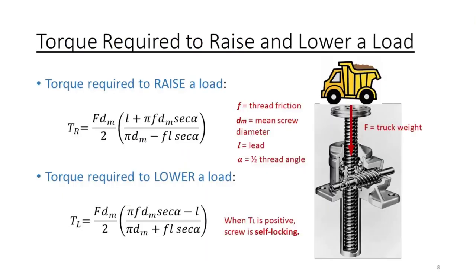Here are the equations that allow you to calculate the amount of torque required to raise and lower a load. The required torque is a function of big F, the axial force required. Little f is the estimate of thread friction. Little l is the lead, which is the same as the pitch for single threaded screws. DM is the mean screw diameter, and alpha is one half of the thread angle.